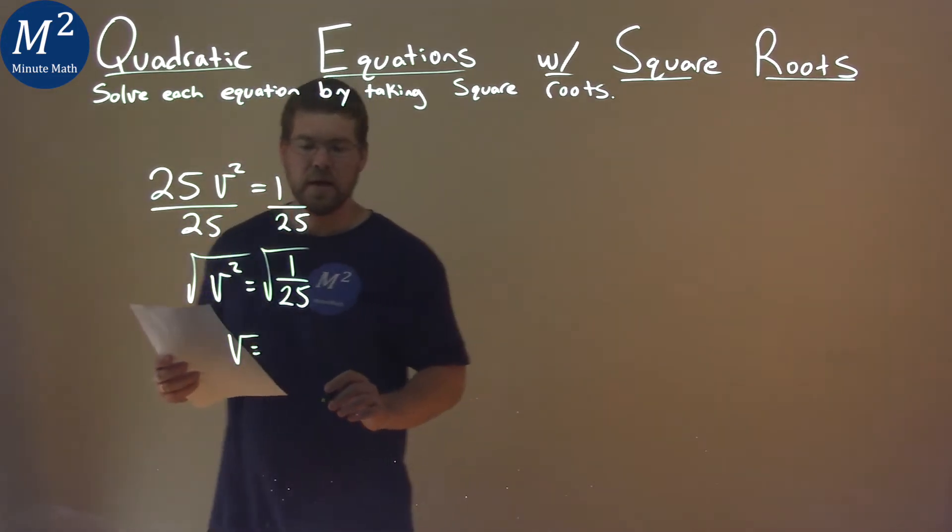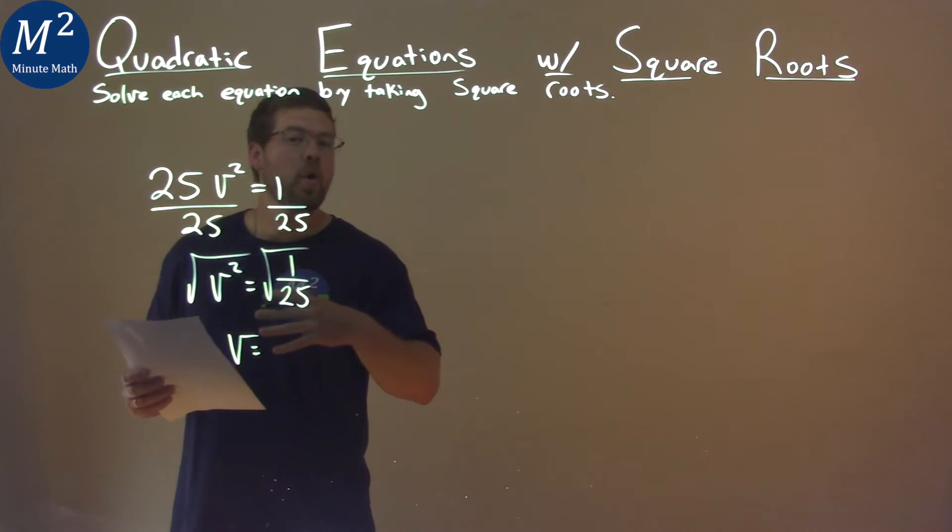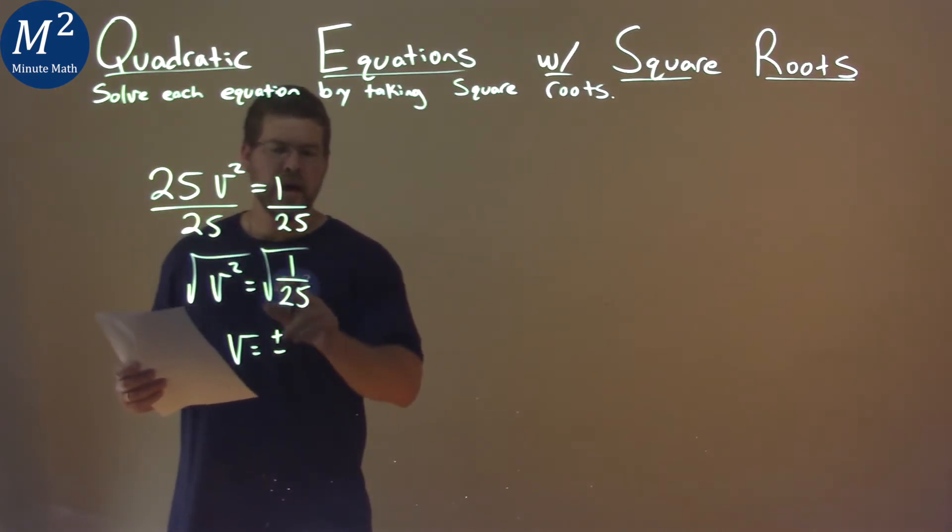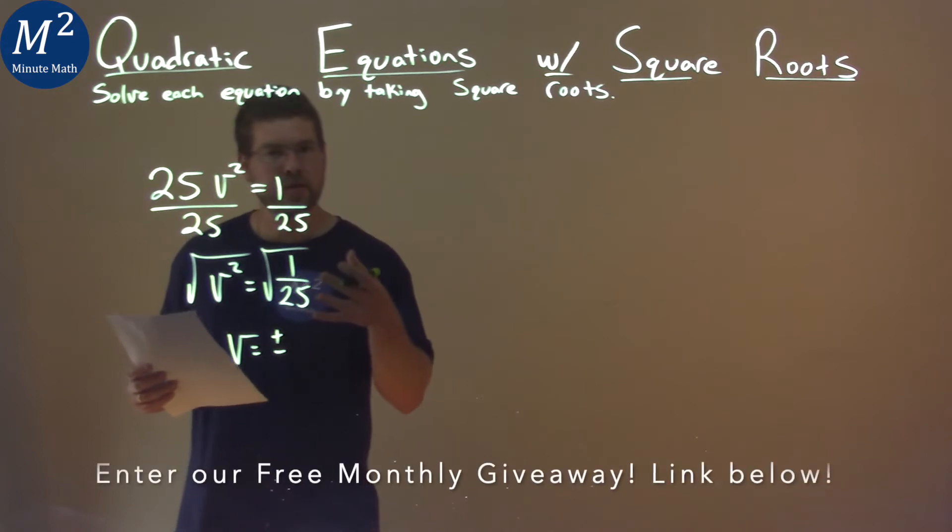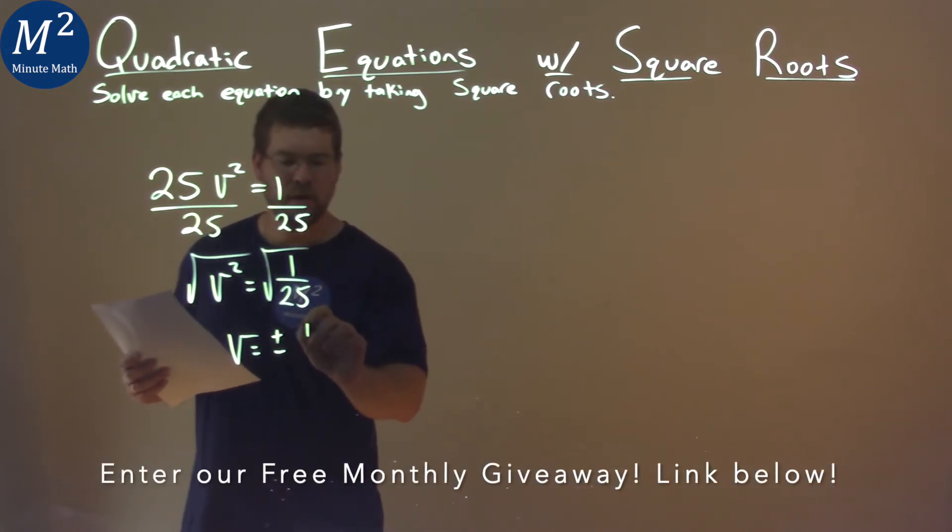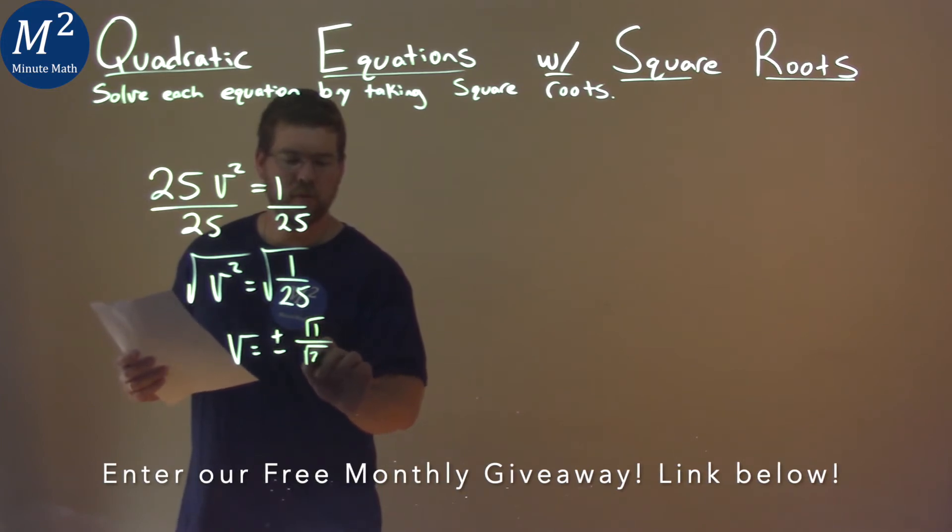Now when we take the square root over an equal sign, we have that plus or minus. And when we take the square root of a fraction, we can take the square root of the numerator and the denominator individually. Square root of 1 over the square root of 25.